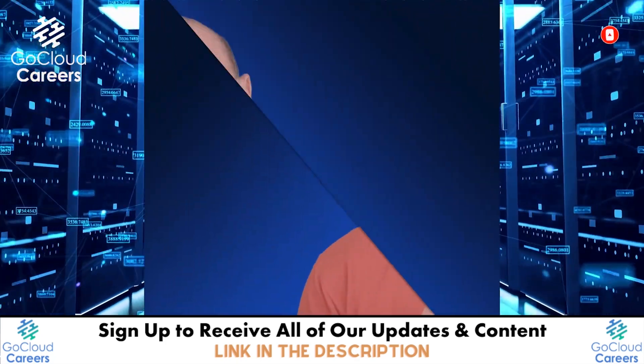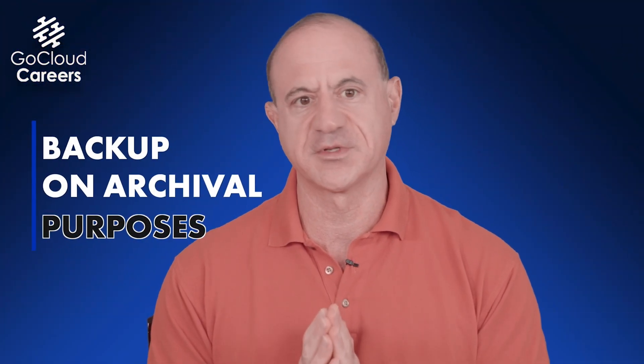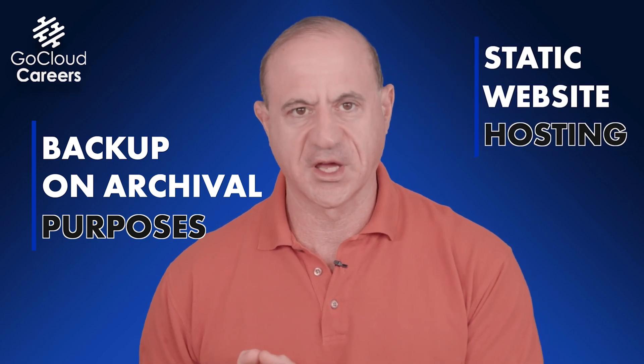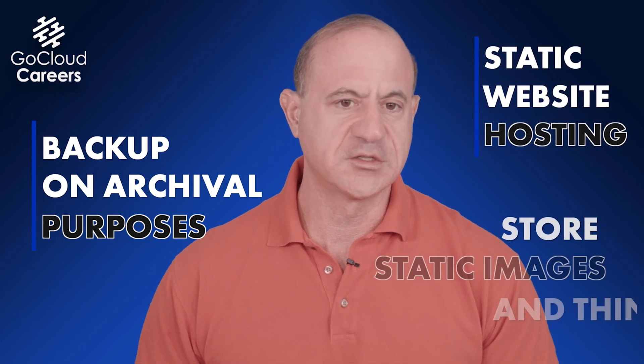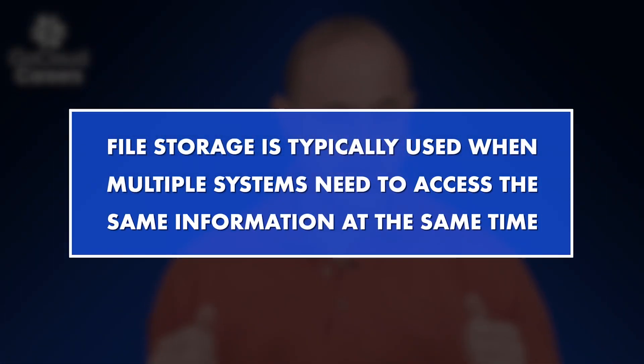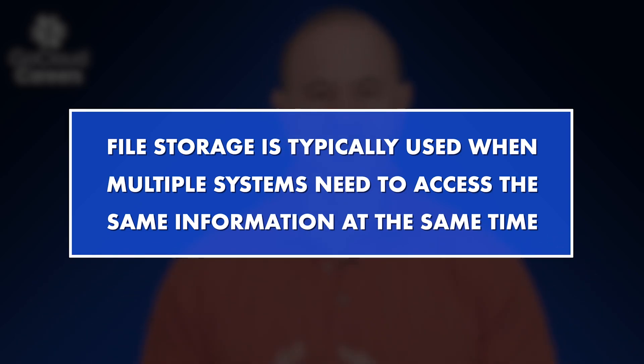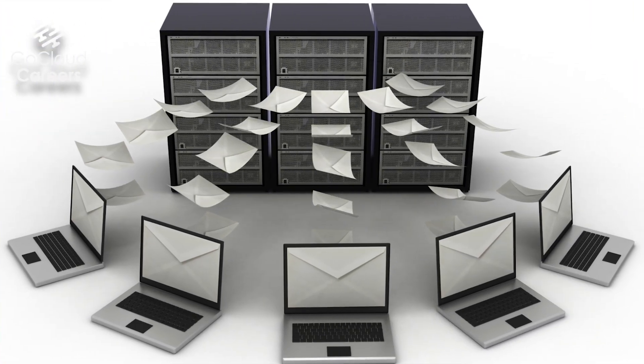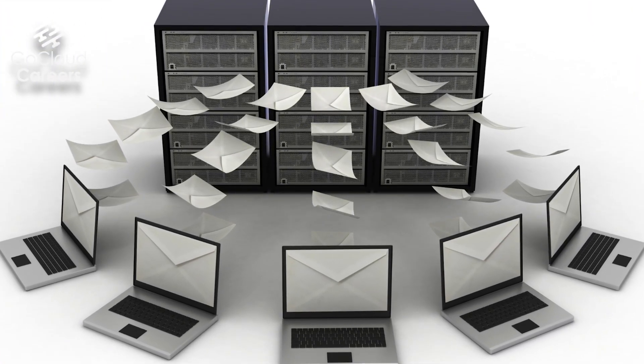I'm looking for the person to know that object storage is typically used for backup and archival purposes, static website hosting, and to store static images and things. And file storage is typically used when multiple systems need to access the same information at the same time — for example, you have a file server and maybe a hundred other servers need to access the same information over the network. And that's how block storage, object storage, and file storage is used in cloud computing.